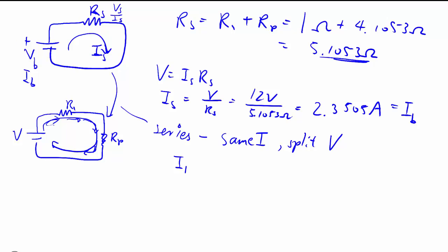So that tells us that our I1 is equal to IP is equal to IS, which we already worked out.